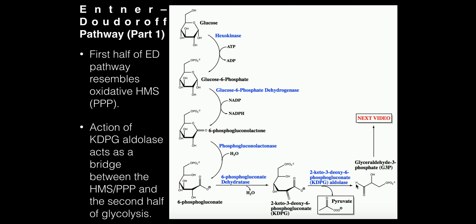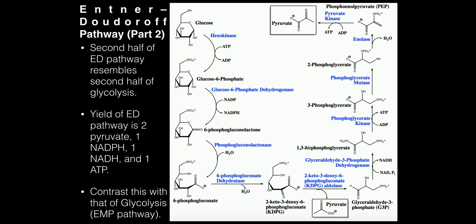KDPG aldolase also produces glyceraldehyde-3-phosphate. If you've studied glycolysis in any organism, you know that glyceraldehyde-3-phosphate, or G3P, is one of the intermediates in glycolysis. Now that we've hit this glycolytic intermediate G3P, we can begin the last half of this pathway — which is just the last half of glycolysis.